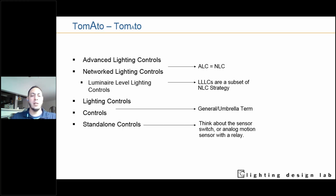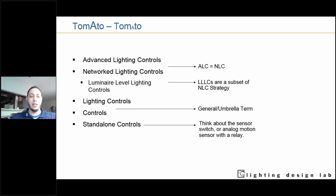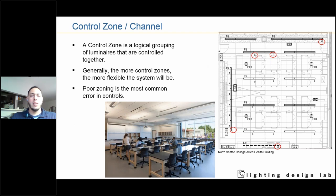Standalone controls are those that are not easily reconfigured — they're more analog, like a sensor with a relay in the ceiling or a dimmer that doesn't communicate with anything else. Moving on to more controls terminology: the control zone is the fundamental indivisible unit of control for lighting systems. It's important to optimize control zoning for visual needs — not what's convenient for the wires, but what's convenient for the user to see in a space.